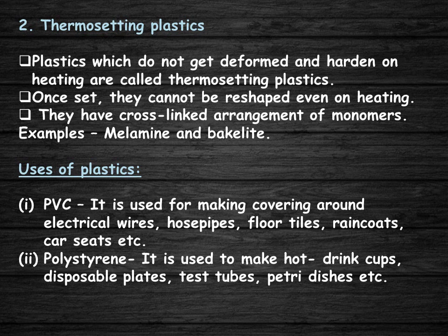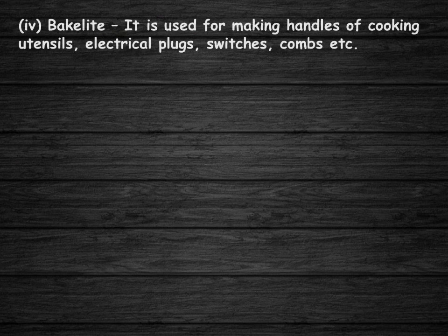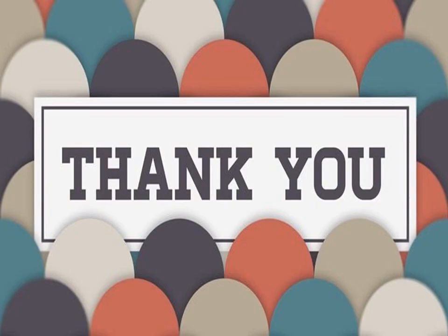Uses of plastics: PVC — used for covering around electrical wires, hose pipes, floor tiles, raincoats, and car seats. Polystyrene — used to make hot drink cups, disposable plates, test tubes, and petri dishes. Polythene — used for making plastic bags, water pipes, and squeeze bottles. Bakelite — used for handles of cooking utensils, electrical plugs, switches, and combs. Melamine — used to make floor tiles, whiteboards, utensils, and fire-resistant fabrics. That was all for today's class.